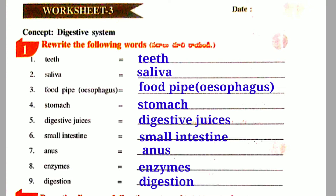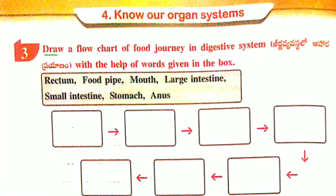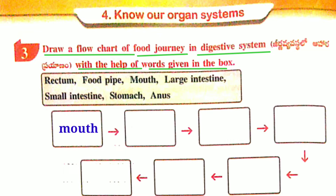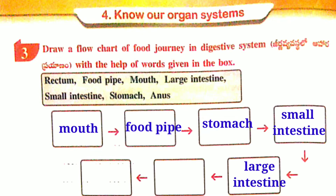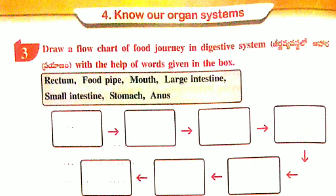Third activity: Draw a flow chart of the food journey in the digestive system with the help of words given in the box. The order is: Mouth, Food Pipe, Stomach, Small Intestine, Large Intestine, Rectum, Anus.